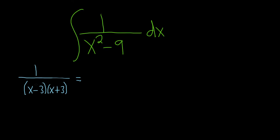So here we have distinct linear factors. So this is a 1, this is a 1, so they're linear and they're different. So we have A over x minus 3 plus B over x plus 3.